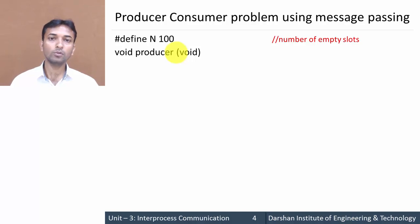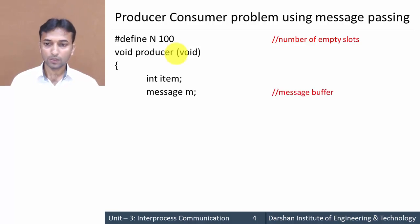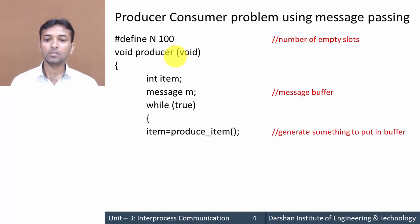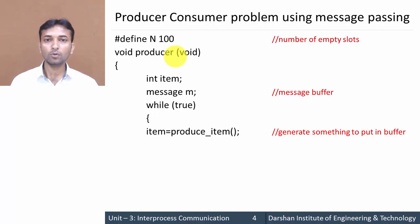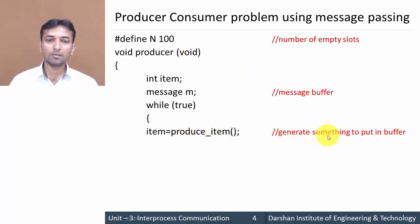Then after, 'void producer(void)' — this function is called by a producer. We declare an integer variable 'item' to produce an item, and 'message m' as a message variable. Inside the while(true) loop, whenever the producer wants to produce some data, 'item = produce_item()' — whatever item is produced by the producer is first inserted into the item variable.